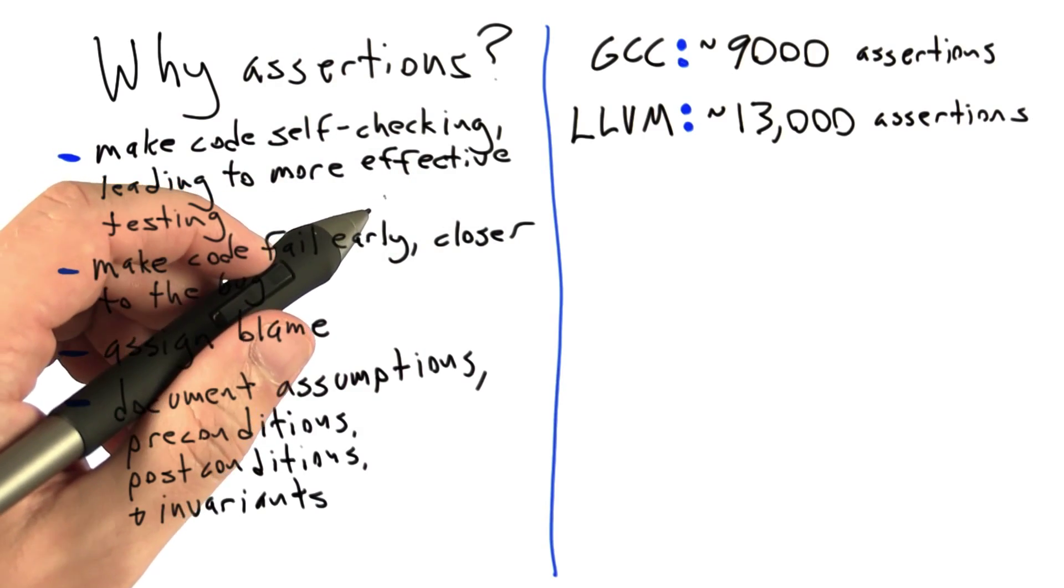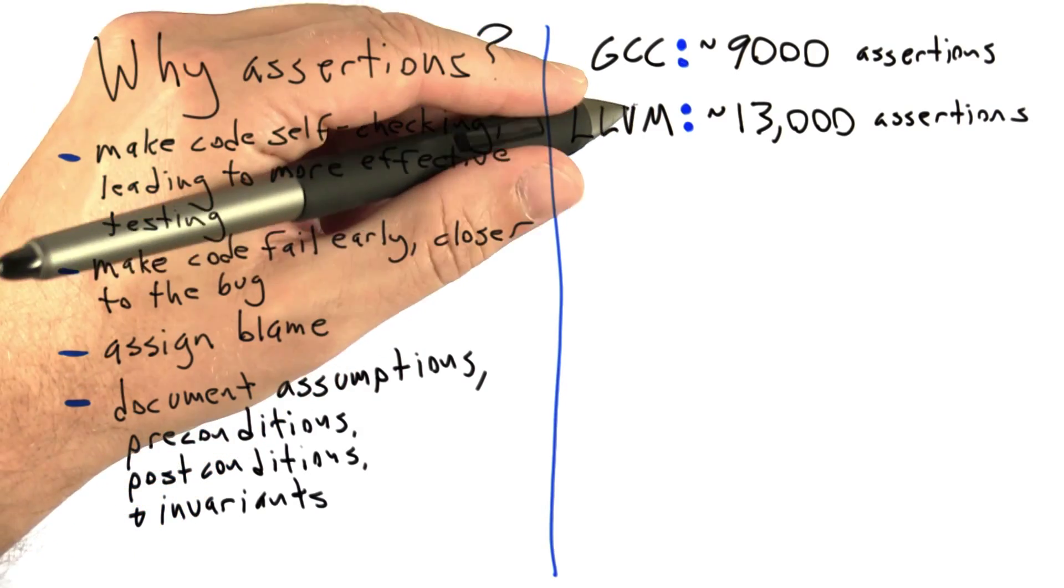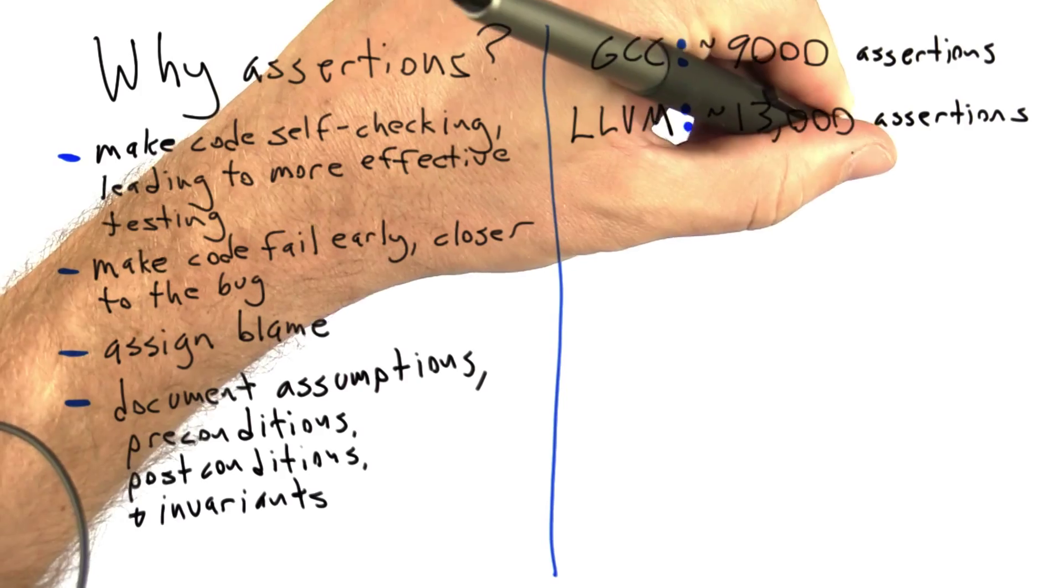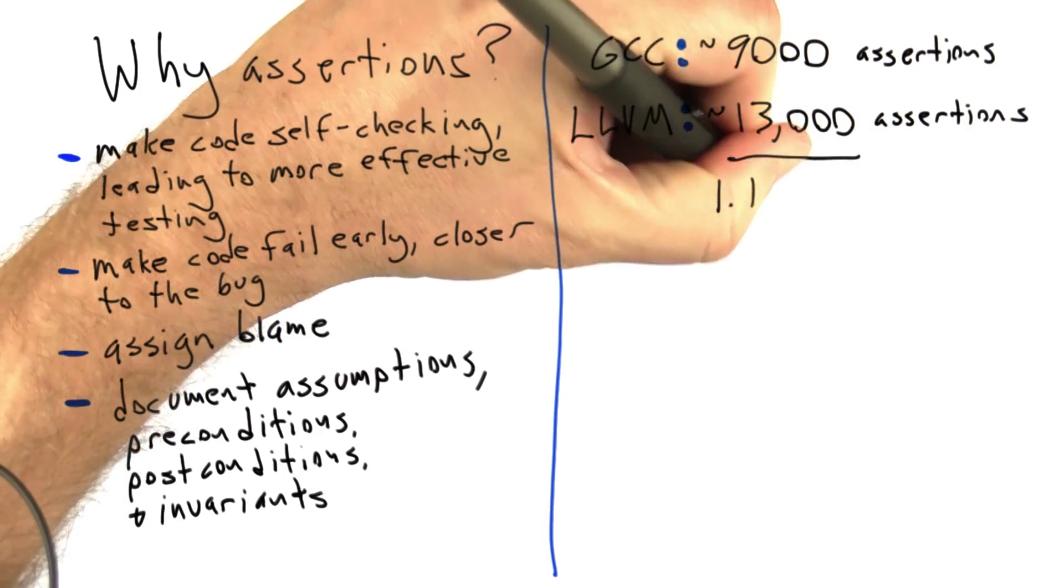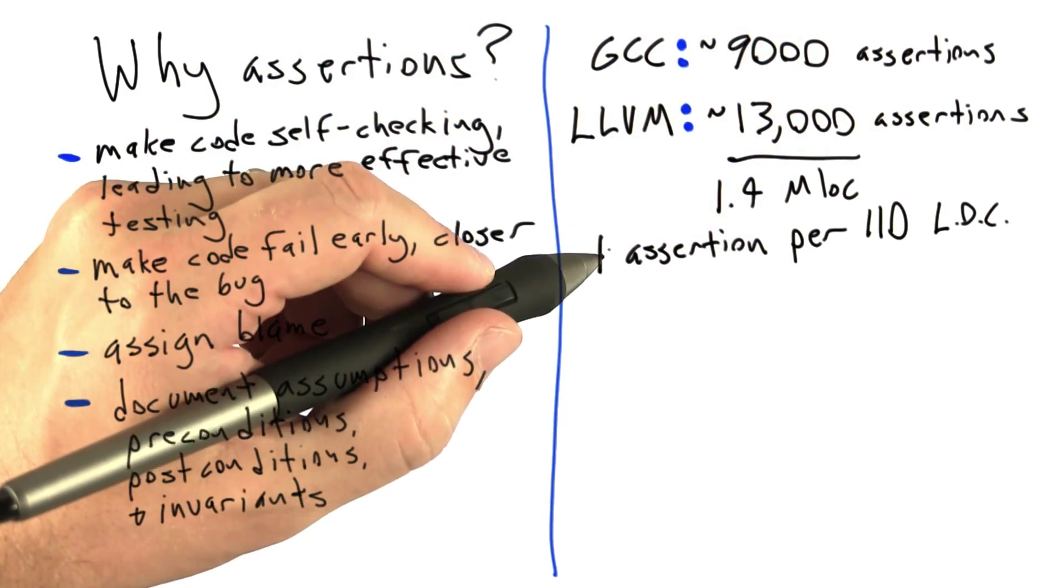The LLVM compiler suite contains about 13,000 assertions. That's over about 1.4 million lines of code for a total of about one assertion per 110 lines of code.